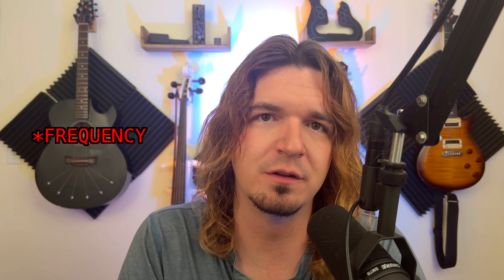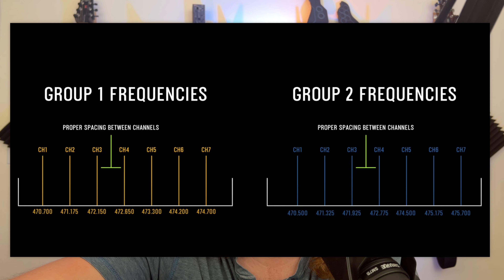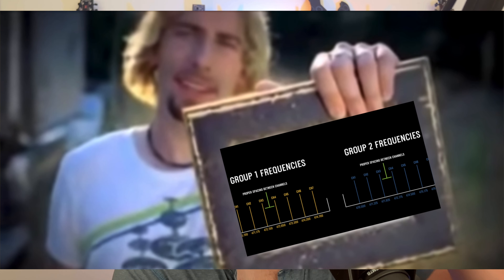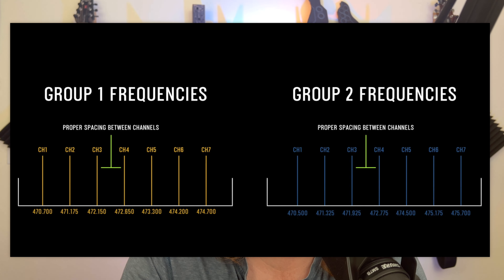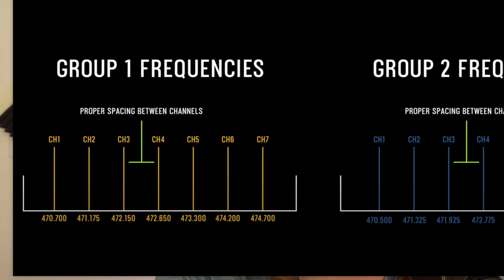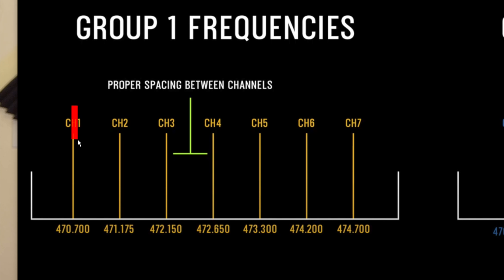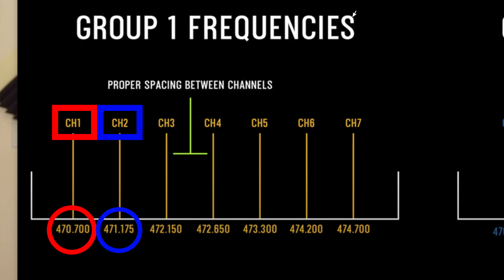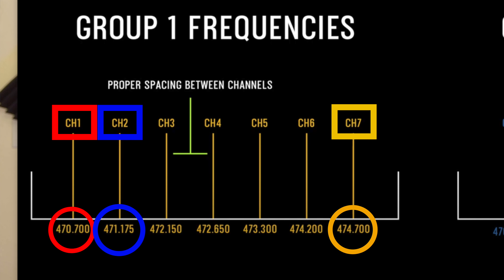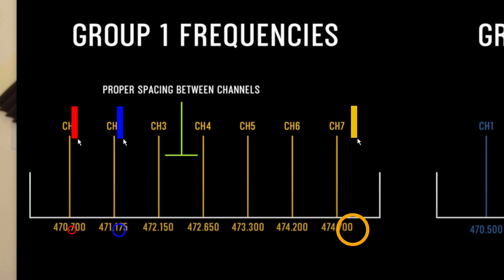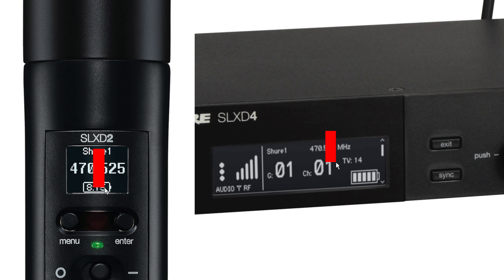I'm going to tie this into groups in a minute, but looking at a graph from a Shure video — I'll post a link in the description — channel one transmits on 470.700 megahertz, channel two transmits on 471.175 megahertz, all the way up to channel seven which is 474.700 megahertz. Those are just the different channels they've chosen to transmit on — the channel is simply the specific frequency that it transmits on. You can almost always see what the frequency is, especially on Shure and Sennheiser gear.